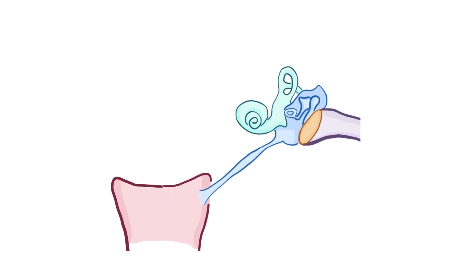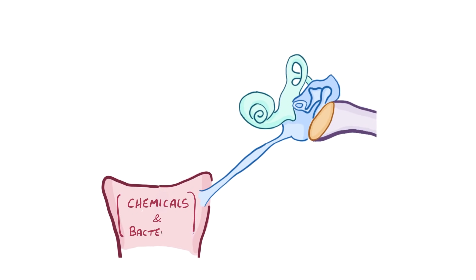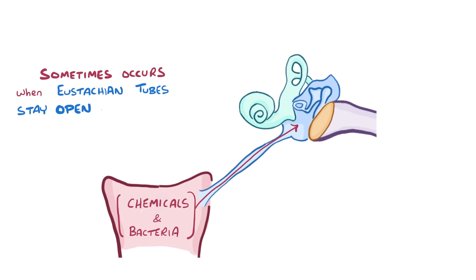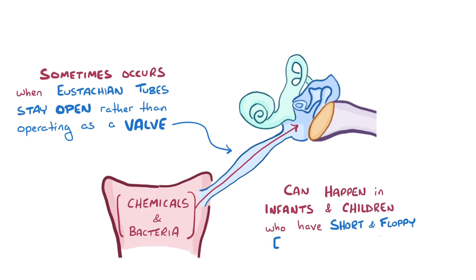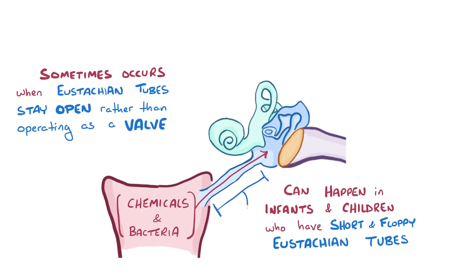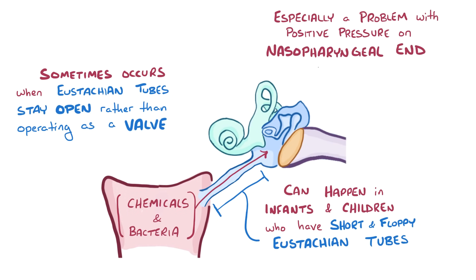The next sort of dysfunction is when the eustachian tube allows chemicals and bacteria to get into the middle ear. This sometimes happens when individuals are born with eustachian tubes that stay open most or all the time, rather than being structurally built as valves. Other times it can happen in infants and children who naturally have short, floppy eustachian tubes that don't do a good job of preventing substances from refluxing back into the middle ear. This can be a real problem when there's a lot of positive pressure on the nasopharyngeal end of the tube, which happens with crying and blowing your nose.